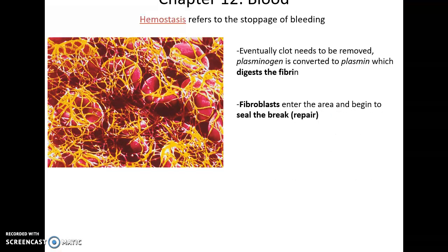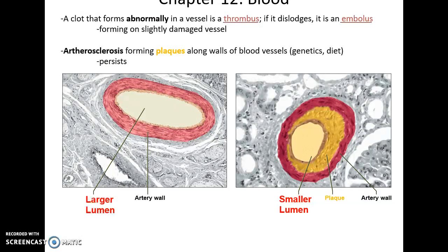Eventually the clot needs to be removed, so there is a protein called plasminogen that becomes plasmin, which helps break down fibrin. Fibroblasts will then arrive to start repair of the damaged tissues. It is also possible to develop an abnormally formed blood clot called a thrombus. If it gets dislodged and starts moving through the bloodstream, it's called an embolus. This could block blood vessels, especially ones subject to plaque formation along their walls — called atherosclerosis — which narrows the lumen of the blood vessel, making it easier for a blood clot to cause a blockage.